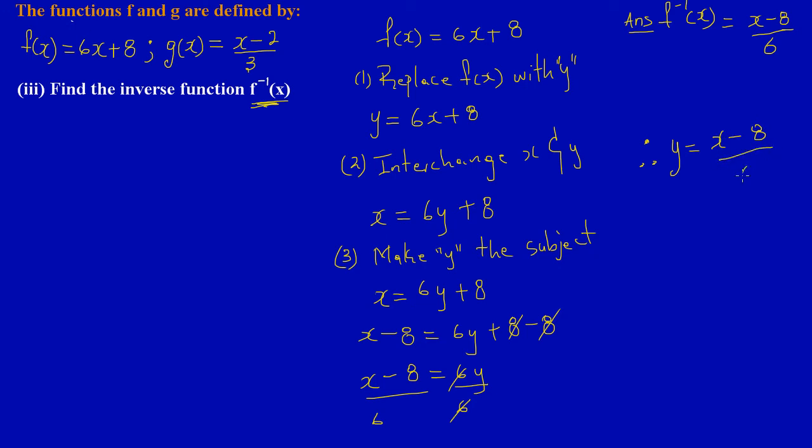Now we can't leave it like this because they ask us for f⁻¹(x). So the last step which is step 4, let me use another color.